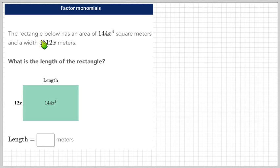Let's start by reading it. The rectangle below has an area of 144x⁴ square meters and a width of 12x meters. These are weird numbers - they have variables on them. What is the length of the rectangle?